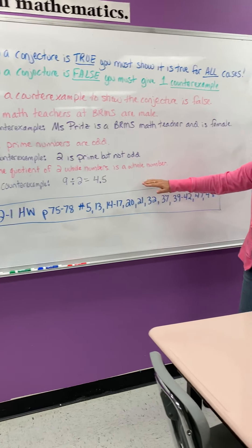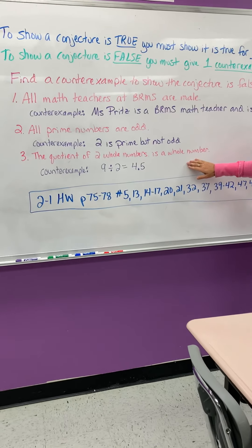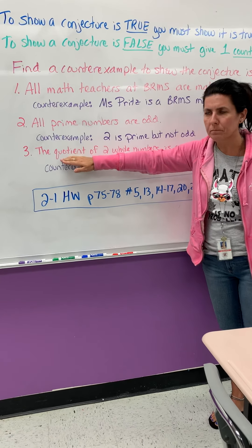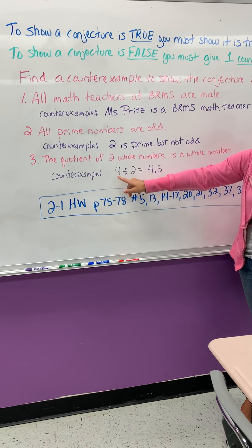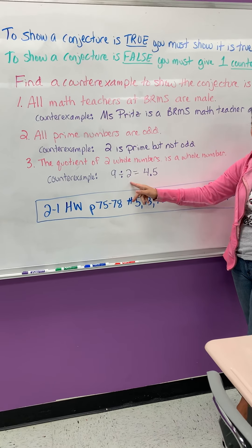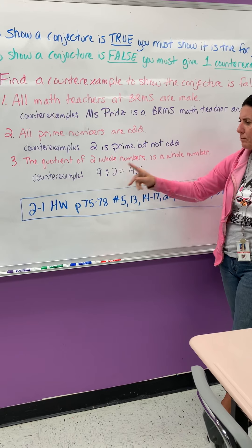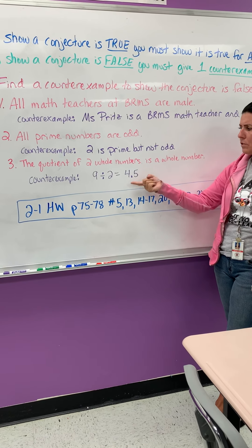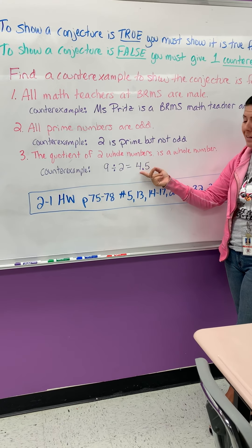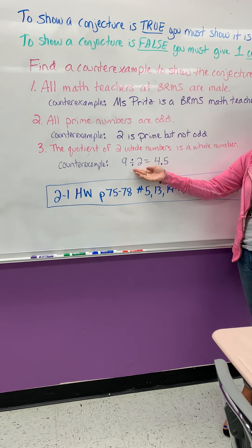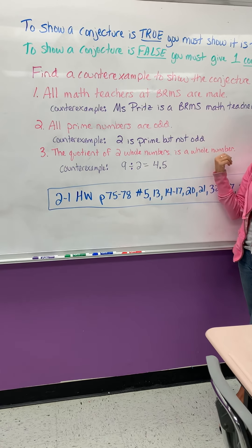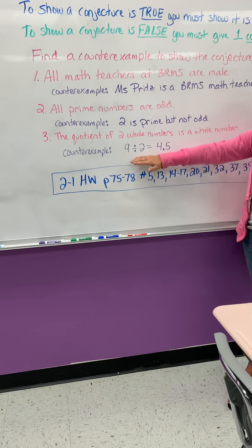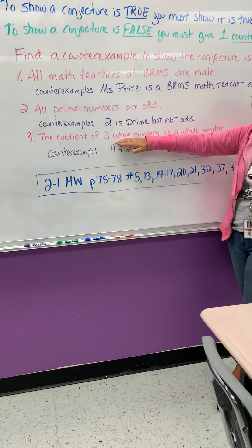The last one, the quotient of two whole numbers is a whole number. Remember quotient is division. So my counterexample is showing that that statement is not true. So here's two whole numbers, nine and two. When I divide them, the statement says that the answer is going to be a whole number and it is not. There's a lot of examples that you can use here. One divided by two gives you 0.5 and that's not a whole number. So there's lots of different examples. You only need one to show that that is not true.